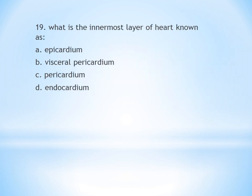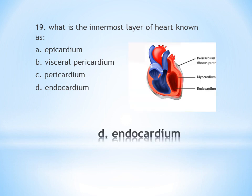Nineteenth question: What is the innermost layer of the heart known as? A. Epicardium, B. Visceral pericardium, C. Pericardium, D. Endocardium. The heart has three layers: endocardium, myocardium, and pericardium. The innermost layer is the endocardium. Answer is D.